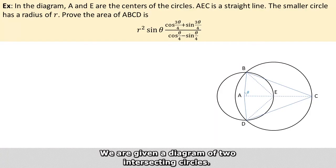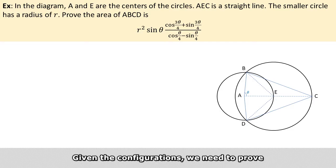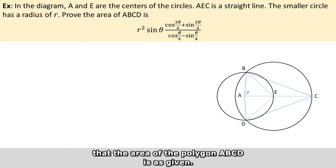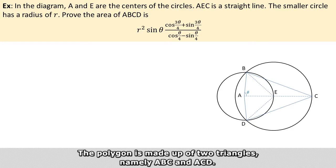We are given a diagram of two intersecting circles. Given the configurations, we need to prove that the area of the polygon ABCD is as given. The polygon is made up of two big triangles, namely ABC and ACD.